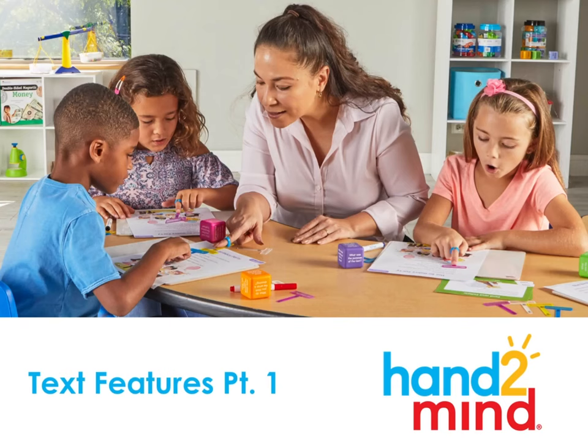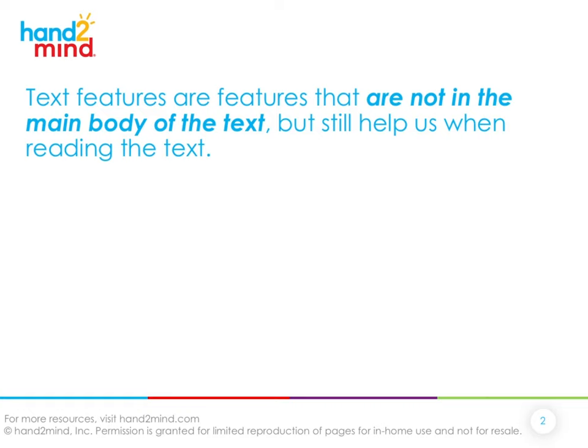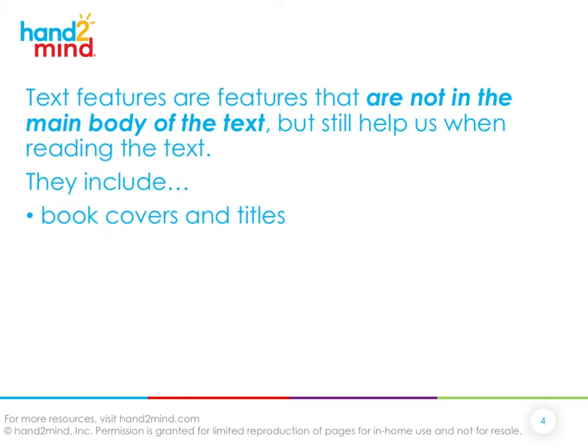Text features are features that are not in the main body of the text — so they're not what you're reading — but they still help us when reading. Text features include book covers and titles, table of contents, headings, subheadings, pictures, captions, diagrams, glossaries, and indexes.